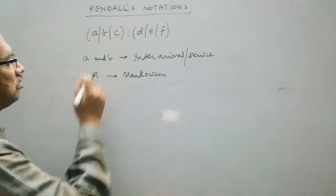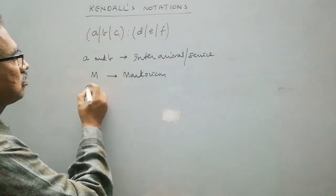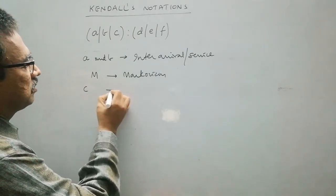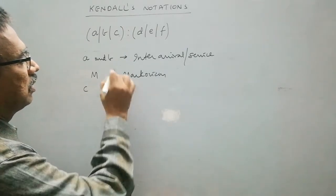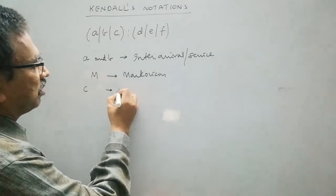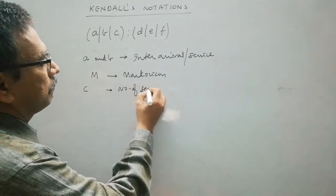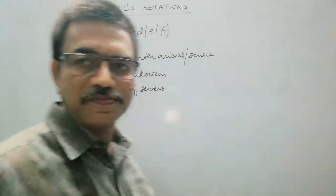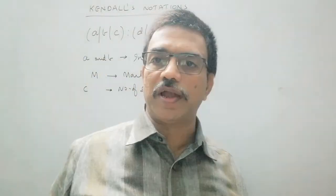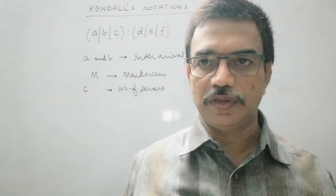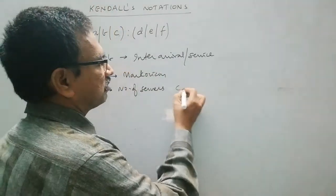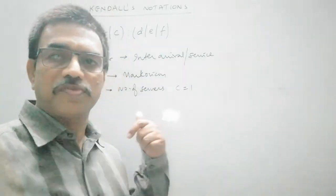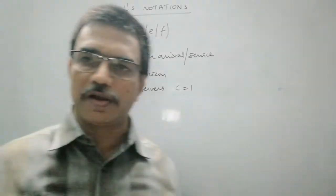Coming to C, this represents the number of servers — parallel servers which will provide the same kind of service. C equals 1 if it is a single server model, or else we will keep C as it is if it is a multi-server model.